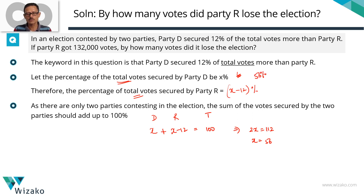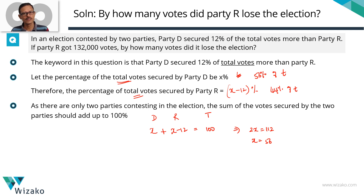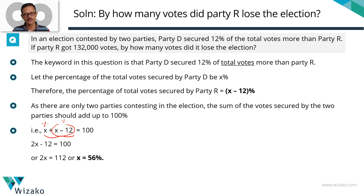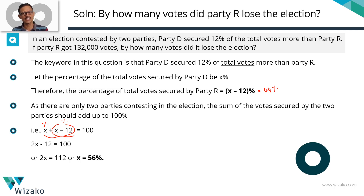x = 56 is the percentage of votes polled by party D as a percentage of total votes. Party R therefore polled 12 percentage points less — 56 minus 12 equals 44 percentage of the total votes. Party D got 56% and party R got 44%. From this point, we can solve the question in two ways. I'll do the first method here and capture the second one in the next slide.